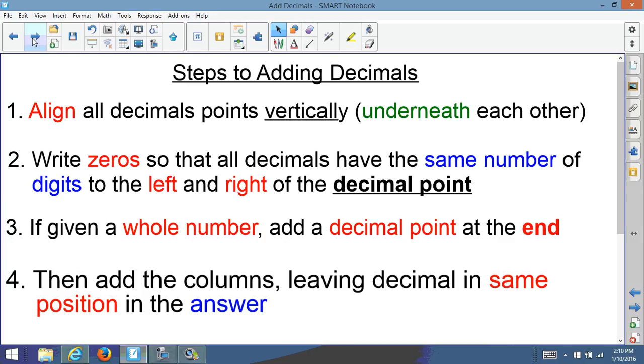Here are the steps for adding decimals. Step 1, align all decimal points vertically. That's underneath each other, so we're going straight down.